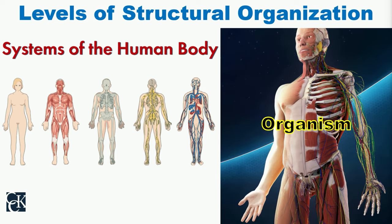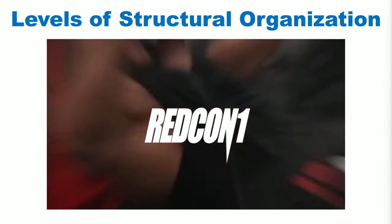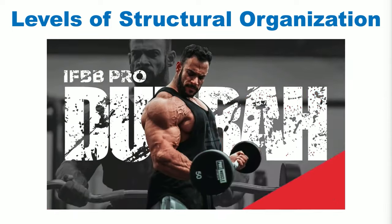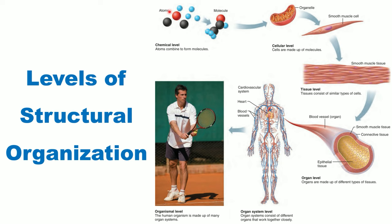These 11 organ systems come together to form the human body — the organism level — moving from level eight to level nine. To sum up: atoms → molecule → macromolecule (the chemical level), then macromolecule → organelle → cell (the cellular level), then cells → tissue (tissue level), then tissue → organ (organ level), then organs → organ system (organ system level).